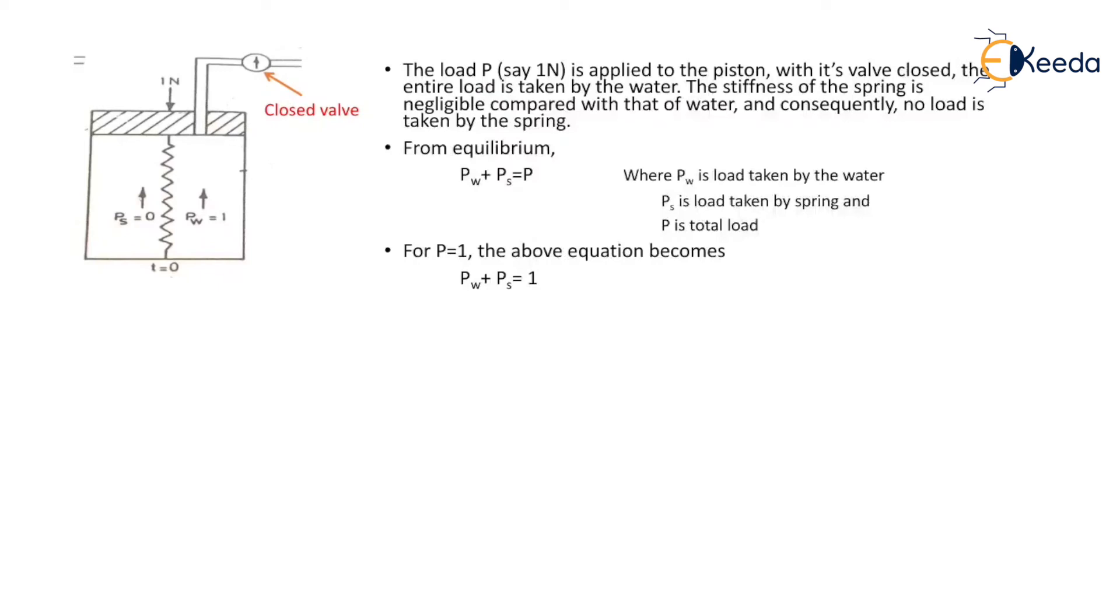For P equal to 1, the equation becomes Pw plus Ps equal to 1. Initially when the valve is closed, load taken by the spring is 0. Therefore, Pw becomes 1.